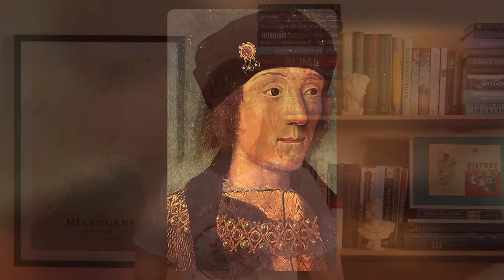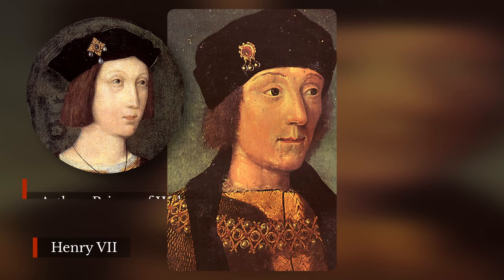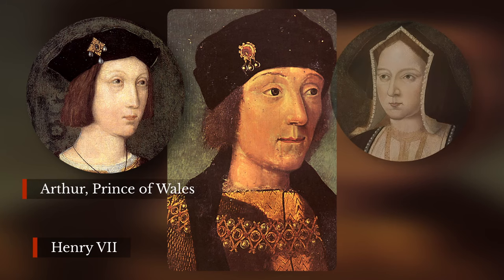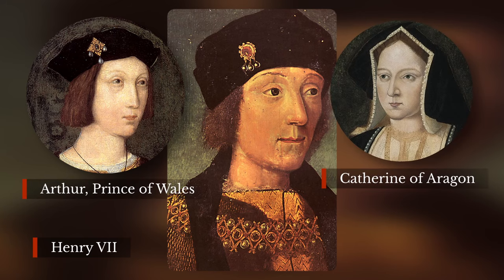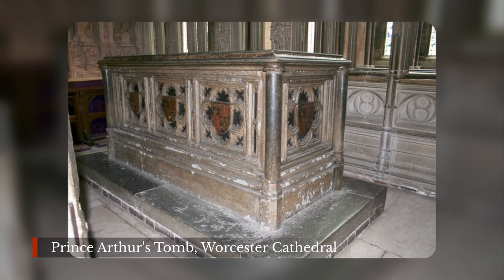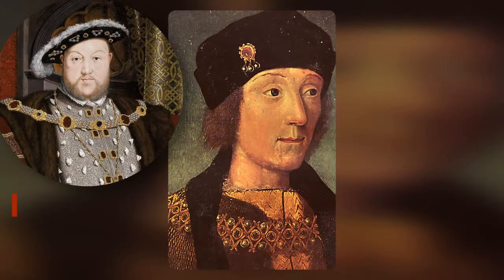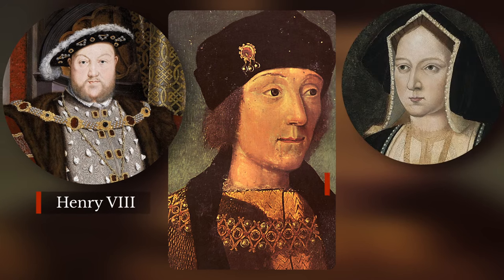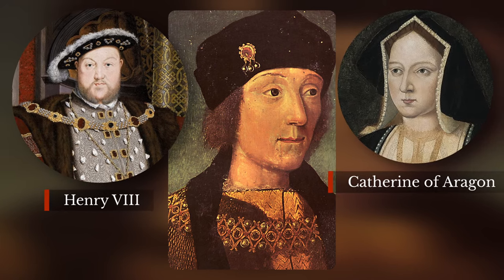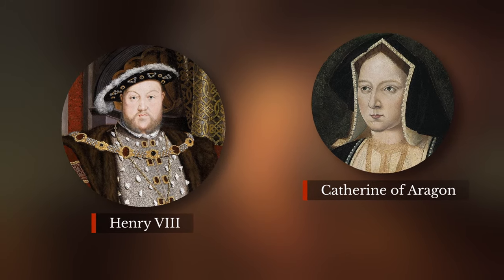The origins of the English Reformation go back to Henry VII of England, who had arranged for his eldest son Arthur to marry the Spanish princess Catherine of Aragon. The two royals married in 1501 but the next year, at the age of just 15, Arthur died. Wanting to keep friendly relations with Spain, special permission was granted from the Pope for Henry VIII to marry his brother's widow. In 1509, Henry VII died and Henry VIII became king of England with Catherine as his wife and queen.